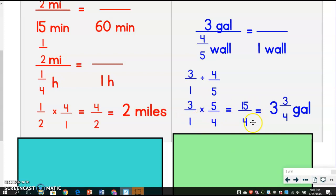So then we multiply straight across. We get 15 over four. And then we just have to change it to a mixed number. So four fits into 15 three times with three-fourths left over. So three and three-fourths gallons is how much you would need for the entire wall.